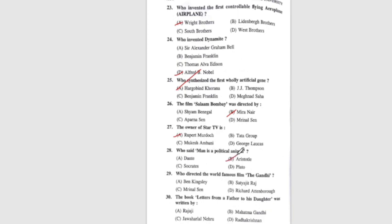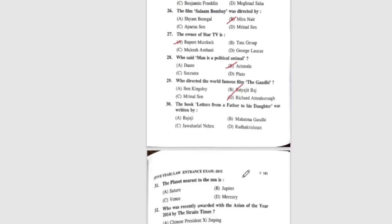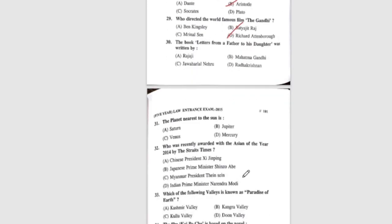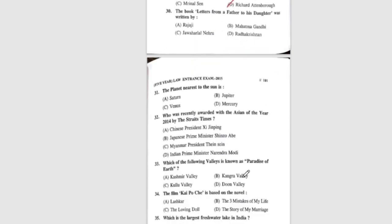Question 29: Who directed the world famous film Gandhi? The correct answer is Richard Attenborough. Question 30: The book Letters from a Father to His Daughter was written by — the correct answer is C, Jawaharlal Nehru.